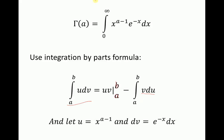Let's have this term here as u, so u equals x to the power of alpha minus 1, and let's have this term here as dv, so dv equals e to the power of minus x times dx. Now we need to figure out v and du.